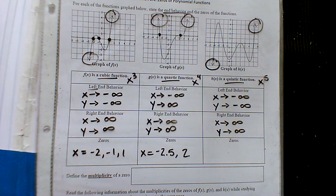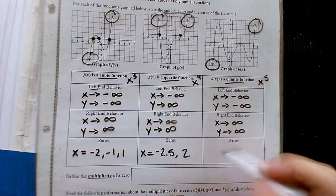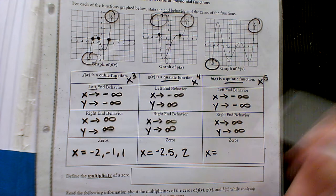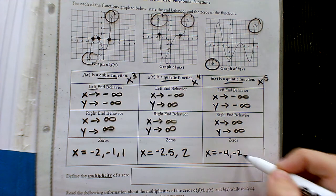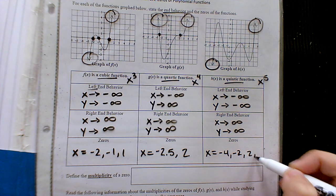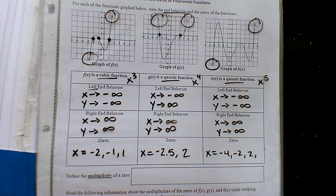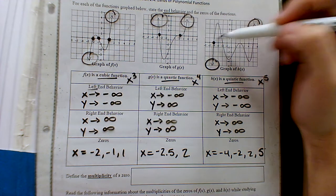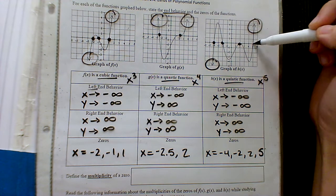How are we doing with end behavior? Left and right side — we're just looking for up and down, a basic characteristic. What about the zeros for this graph? Eli: negative two and... five? Okay, so we have quite a few for this one.